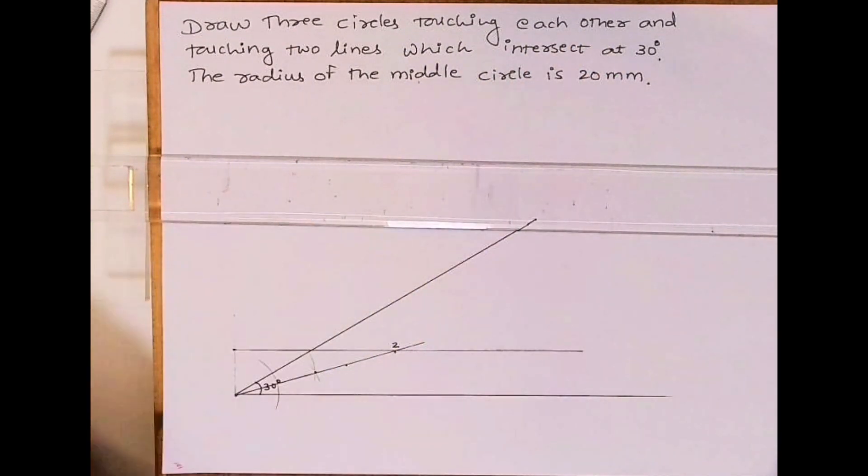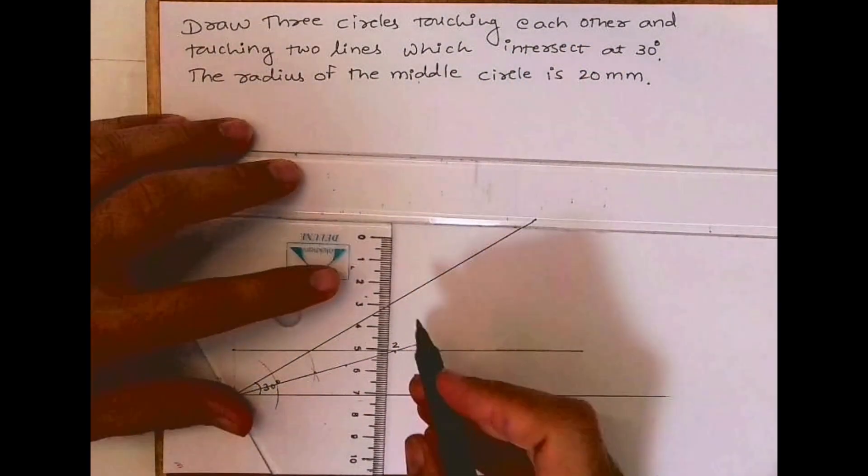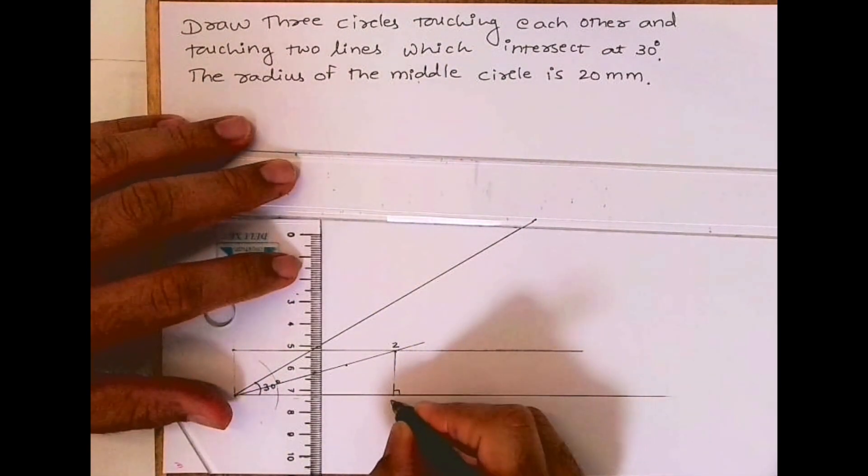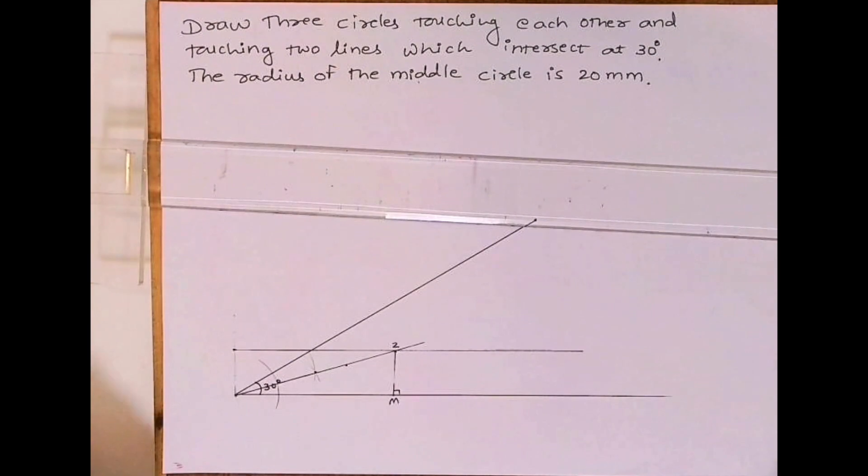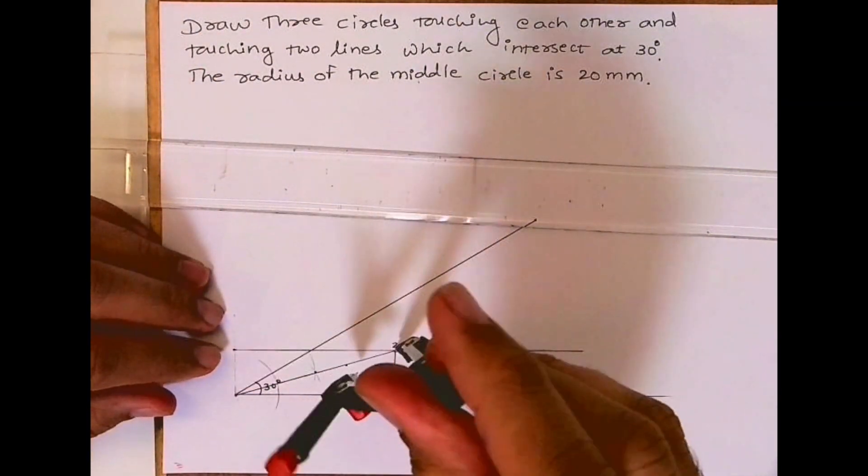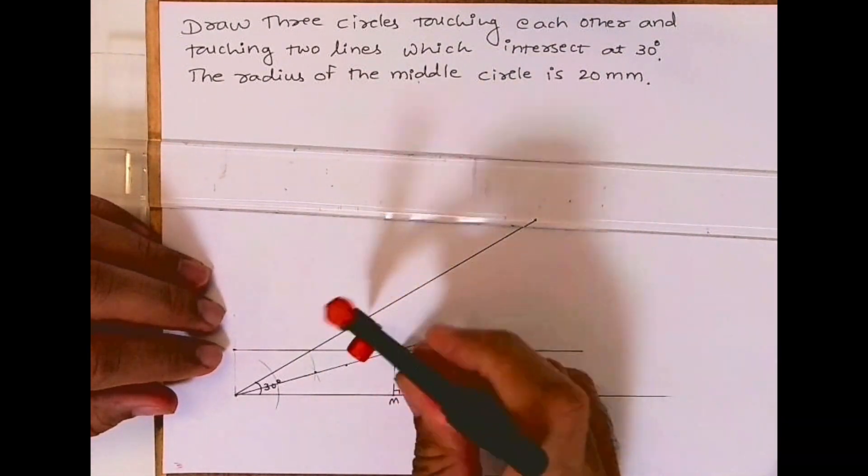I am writing O2 because that is the middle circle radius. From O2 we'll draw a vertical line to get M. Now take O2 to M and draw the radius, so you'll get the required circle.